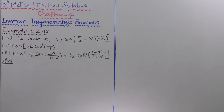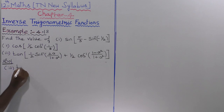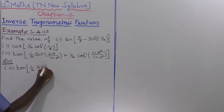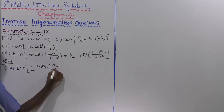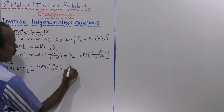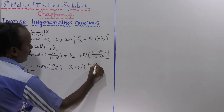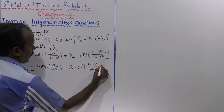Example 4.18, third subdivision. The expression is: tan of into 1 by 2 sin inverse of 2a whole divided by 1 plus a square, plus 1 by 2 into cos inverse of 1 minus a square whole divided by 1 plus a square.